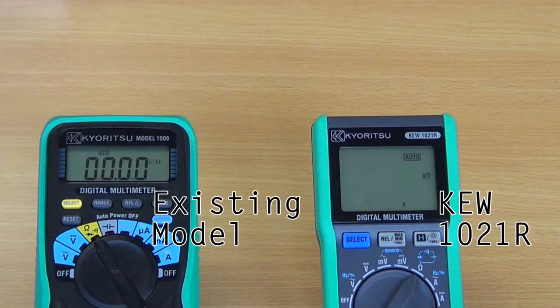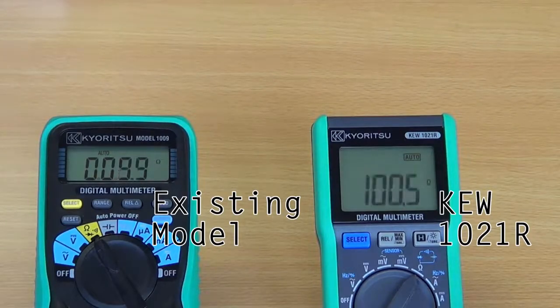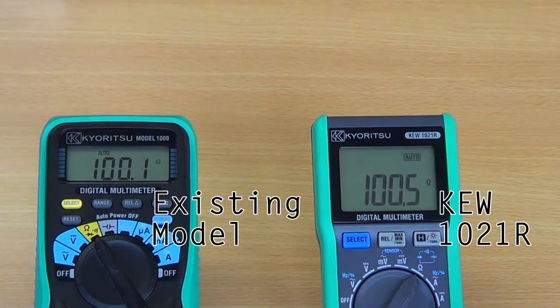Secondly, user-friendliness. Compared to most other multimeters, the KEW1021R has a much larger LCD display and features a backlight function, making it easier for the user to read.